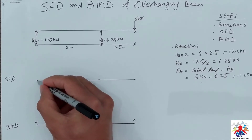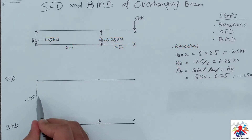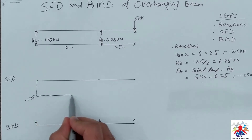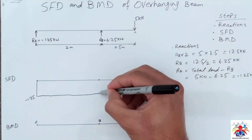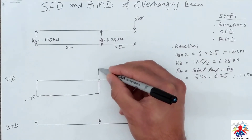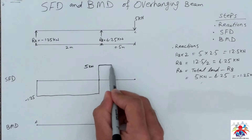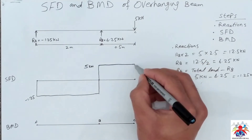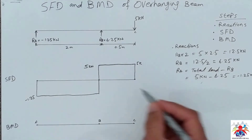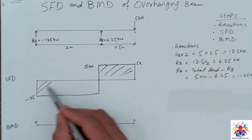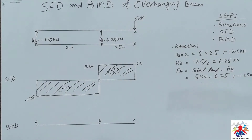Based on these numbers we can draw the shear force diagram. At RA we have minus 1.25, so we go down to minus 1.25. Moving to point B, the value is 6.25, so we go up — that's 1.25 then up by 5, giving 5 kilo-newton. From point B to point C we draw a straight line, and then we have 5 kilo-newton acting downward at the end of the beam. This is our shear force diagram — the negative zone and the positive zone.